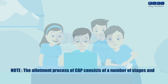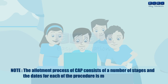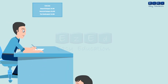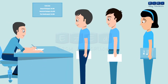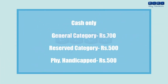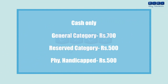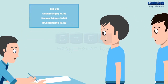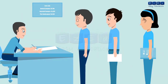The allotment process of CAP consists of a number of stages and the dates for each procedure are mentioned on the DTE's site. The first stage begins with the purchase of the application kit from the nearest ARC against payment in cash. For general category candidates, the cost of the kit is ₹700, whereas for reserved category and physically handicapped candidates belonging to Maharashtra state, the cost is reduced to ₹500. No other mode of payment is applicable.